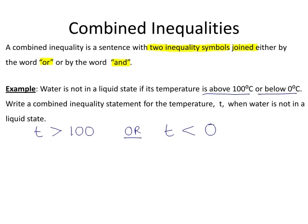So this is a combined inequality — a sentence with two inequality symbols. We have one here and one there, and it is joined by the word OR.